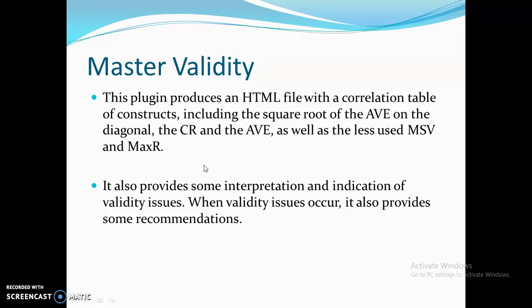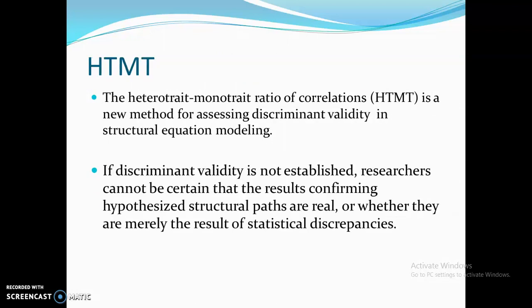The Master Validity plugin produces an HTML file with a correlation table of constructs that represents the square root of the Average Variance Extracted (AVE) on the diagonal, the Composite Reliability, Average Variance Extracted, as well as MSV and MaxR. It also provides interpretation and identification of validity issues if your model or constructs are suffering from validity issues.